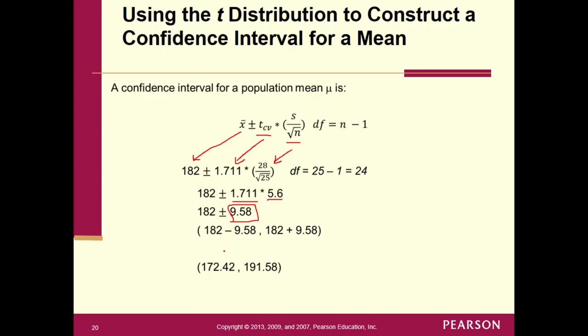So what do we do? We take our point estimate of 182, subtract off the margin of error. We take our point estimate, add the margin of error to get our confidence interval. So there's our confidence interval. And what do we think is located in there? What do we think is located between 172.42 and 191.58? It's mu. It's a population mean, however it was being defined in the problem. So the calculation actually is kind of straightforward.